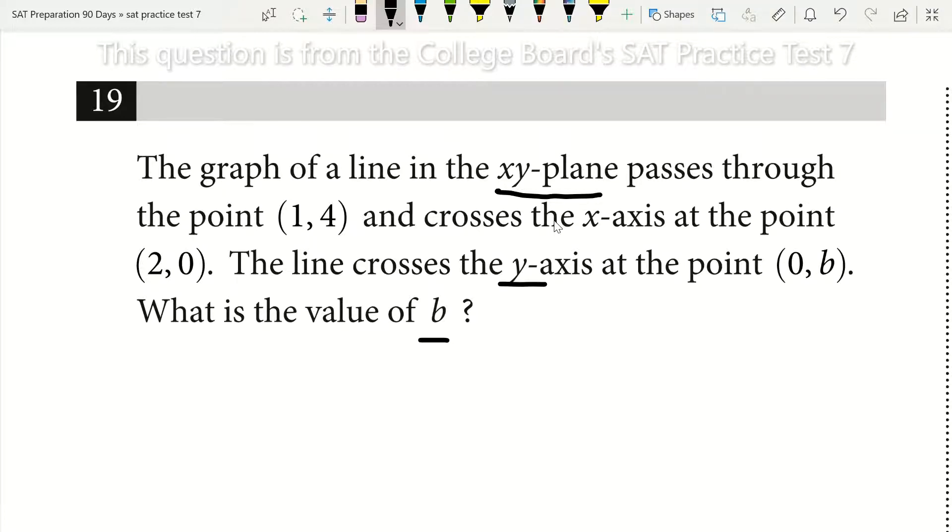So what you can do instead, since we see we have a point 0 for x, is we see when we go from 2 to 1, so going back 1x, we go up by 4. So if we were to go back another 1 from 1, we're going to get to 0. We just add another 4 then, and we get 8.